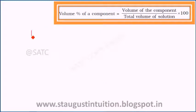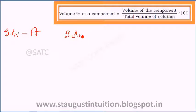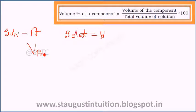Let solvent be A and solute be B. The volume of the solvent is VA, and the volume of the solute is VB.